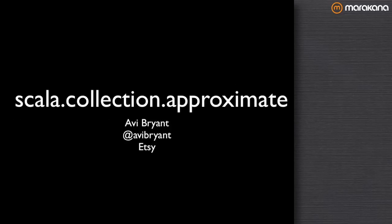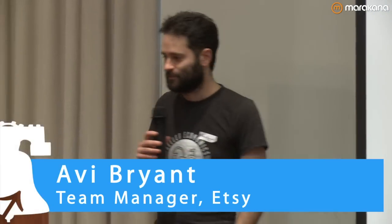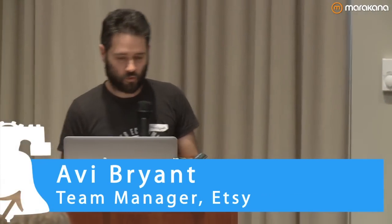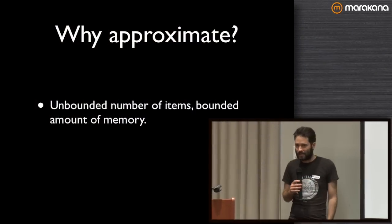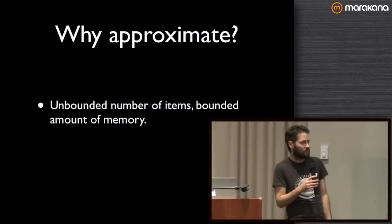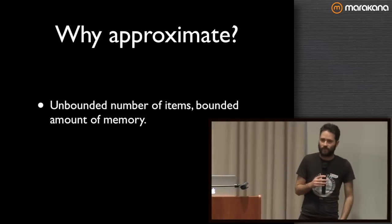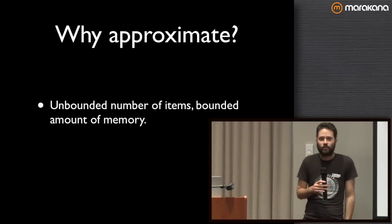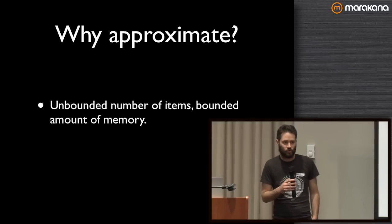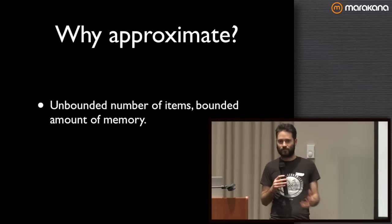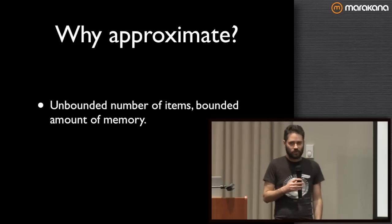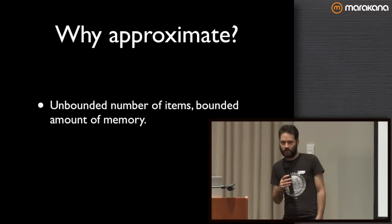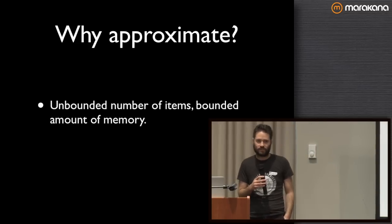I'm Avi Bryan, currently at Etsy. I'm going to talk about approximate collections. Why would we ever want an approximate collection? There are times when you have a collection of an unbounded or very large number of items — millions, billions of items — but you've only got a bounded amount of memory. You want to get some of the summaries or aggregates or properties of a collection like a set, but without actually storing all of the items. So necessarily, what you're going to have is an approximation.